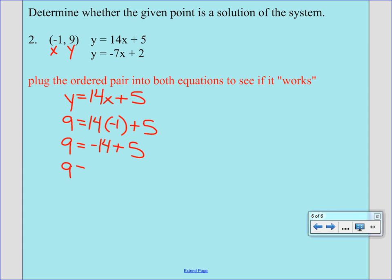And then we add in the 5. Simplifying the right hand side, negative 14 plus 5 is negative 9. And we have a little problem here because 9 is not equal to negative 9. That means that this point is not a solution. If it doesn't work in one equation we don't have to go any further because it can't satisfy both. So in a way it's kind of nice because our work is less. So it is not a solution and you would just answer no.